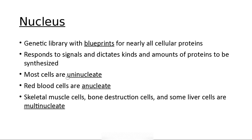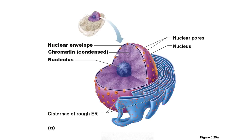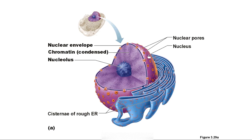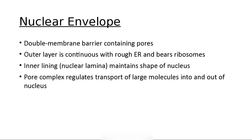Most cells have one nucleus — they're uninucleate. Red blood cells have no nucleus; 'a' means without. They have one when immature but then lose it. Bone destruction cells and some liver cells are multinucleate. The nuclear envelope is just the wrapper, with pores that regulate transport of large molecules into and out of the nucleus, and it is continuous with the endoplasmic reticulum with ribosomes.